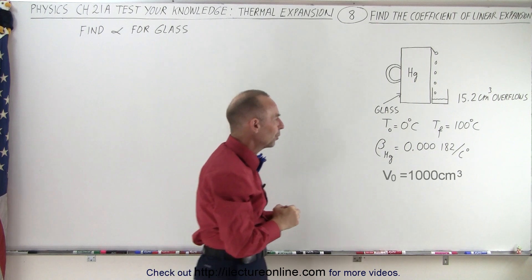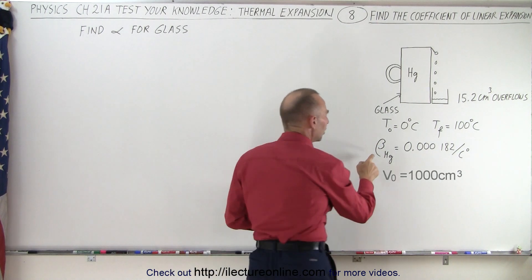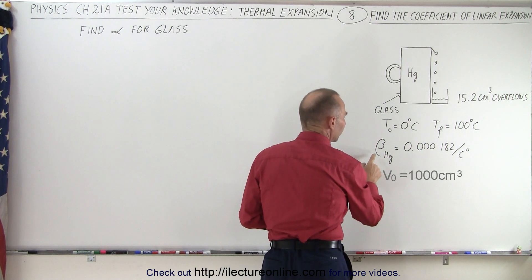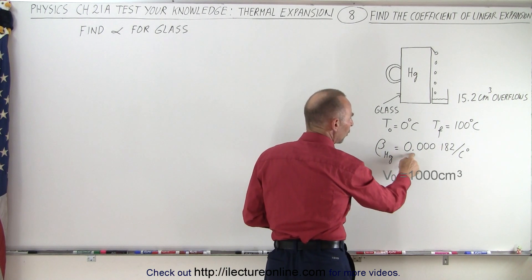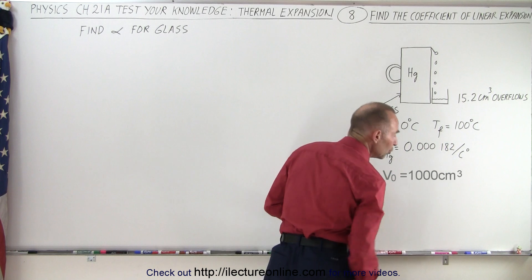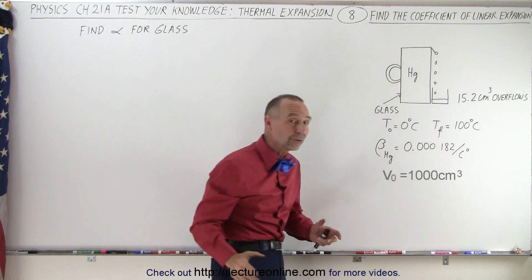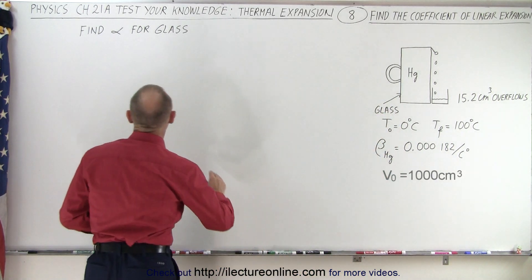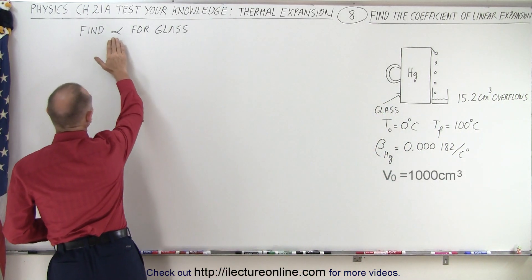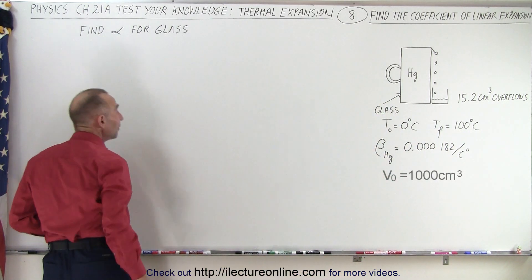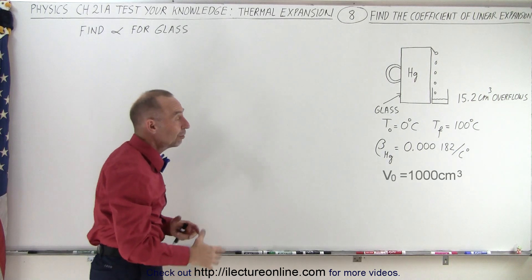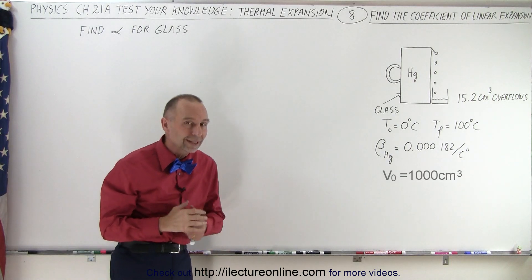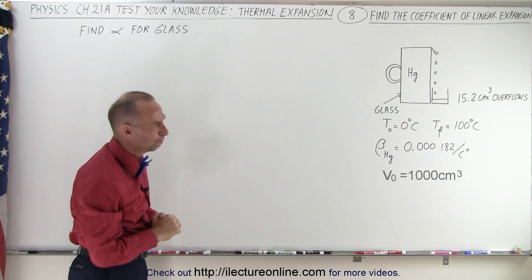Knowing that the volume expansion coefficient for mercury is 0.000182 per centigrade degree, we are now supposed to find the linear coefficient of thermal expansion for the glass.